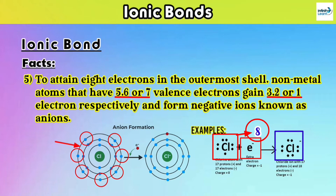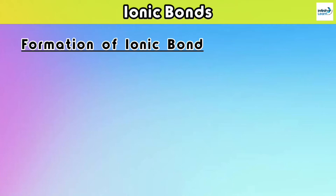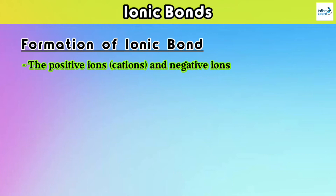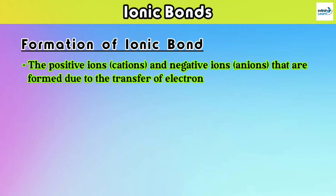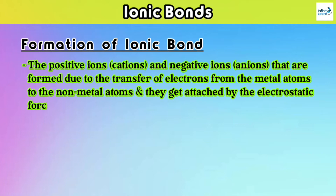Now let's move to the second term: formation of ionic bond. The positive ions, called cations, and the negative ions, called anions, are formed due to the transfer of electrons from metal atoms to non-metal atoms. They then become attached to each other by electrostatic force due to their opposite charges.